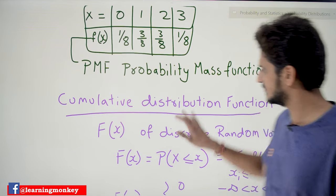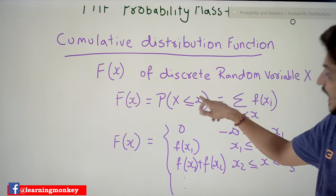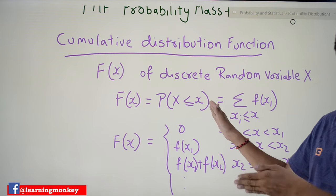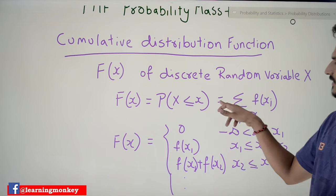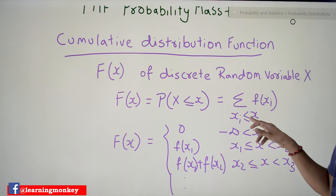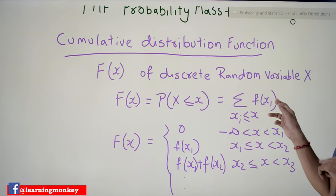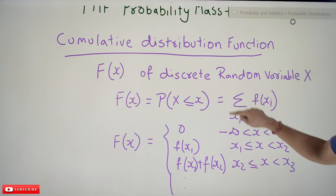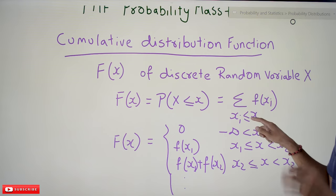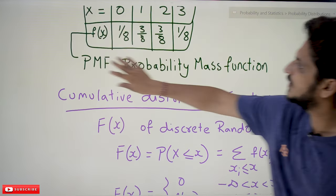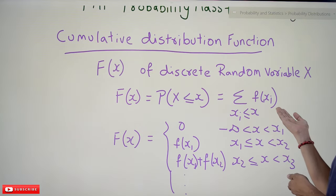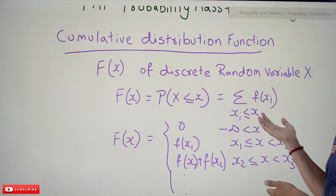So F(x) = P(X ≤ x) means we add all values before x and up to x. This is given as a summation: F(x) = Σ f(xi) for all xi ≤ x, where small f(xi) is the probability mass function. This is the cumulative distribution function for discrete probability or probability mass function. If you know the probability mass function you can easily write the cumulative distribution function.